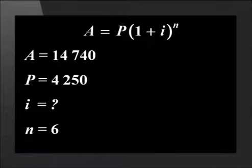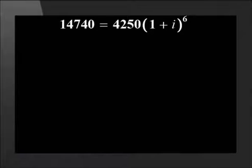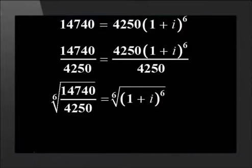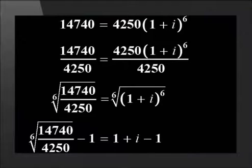This gives us 14,740 equals 4,250 times (1 plus i) to the power of 6. We divide both sides of the equation by 4,250. Then find the root of 6 on both sides of the equation. And lastly, subtract 1 from both sides.